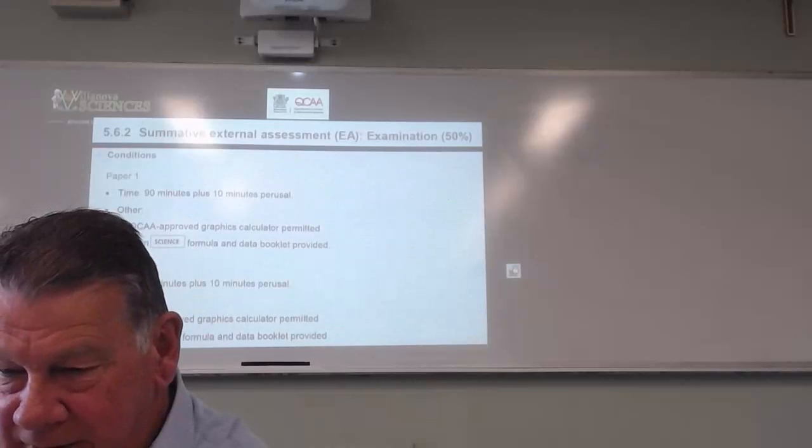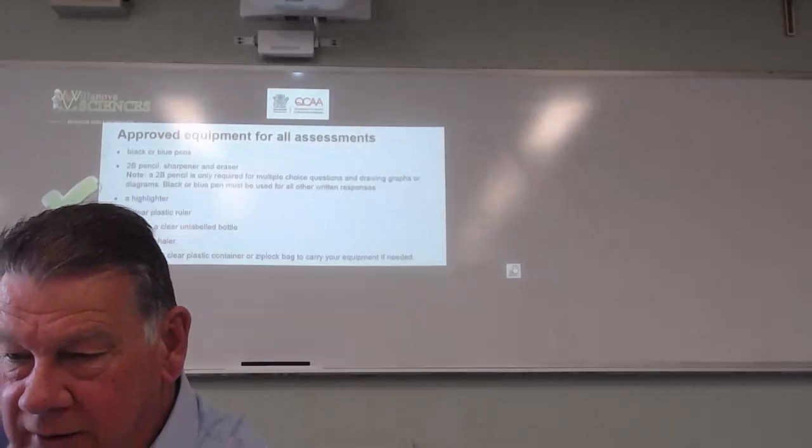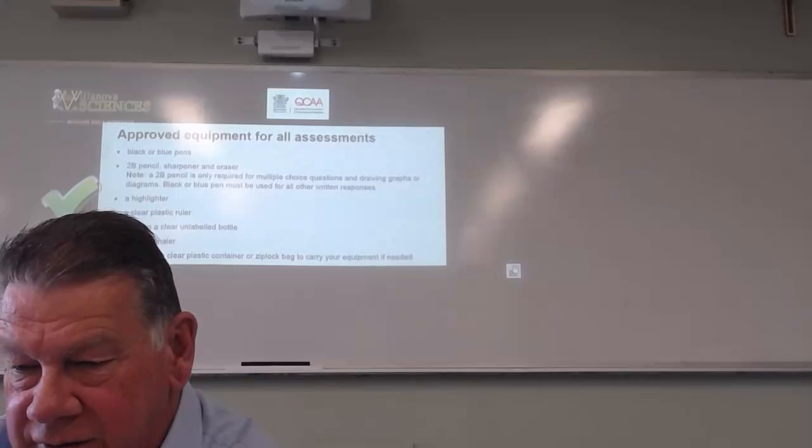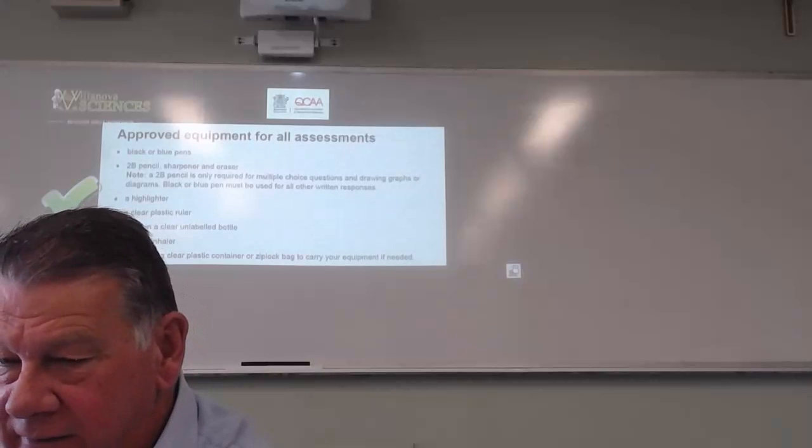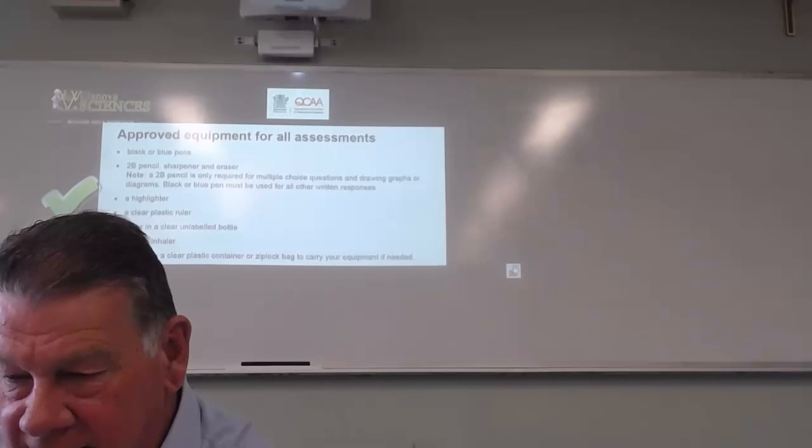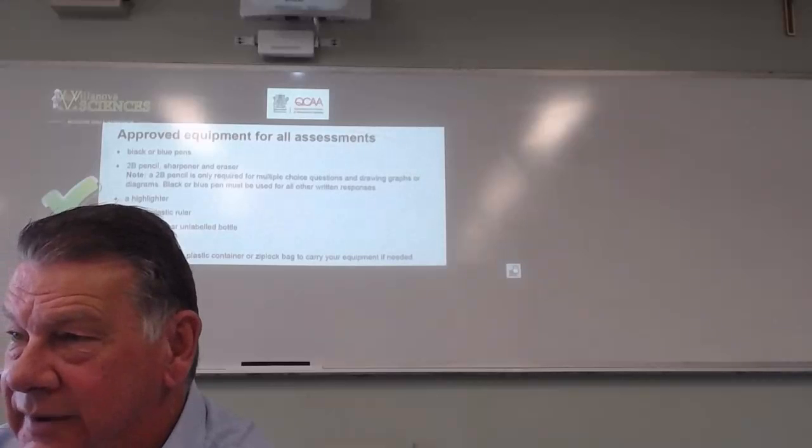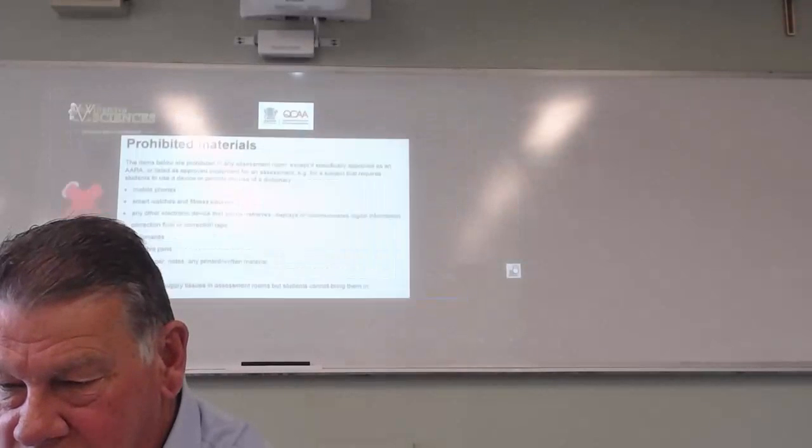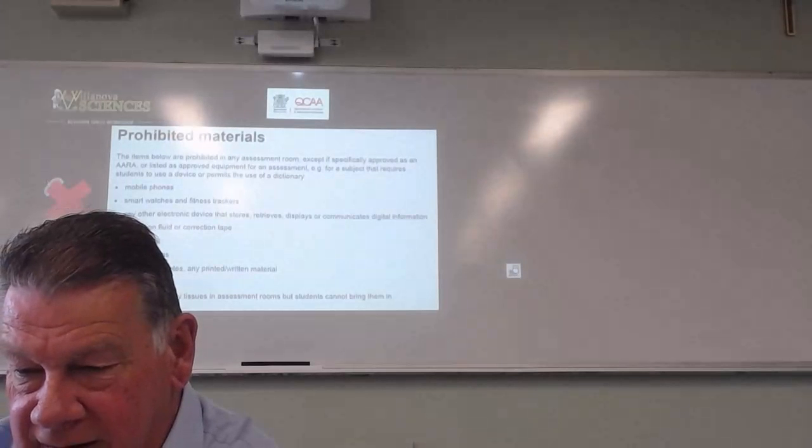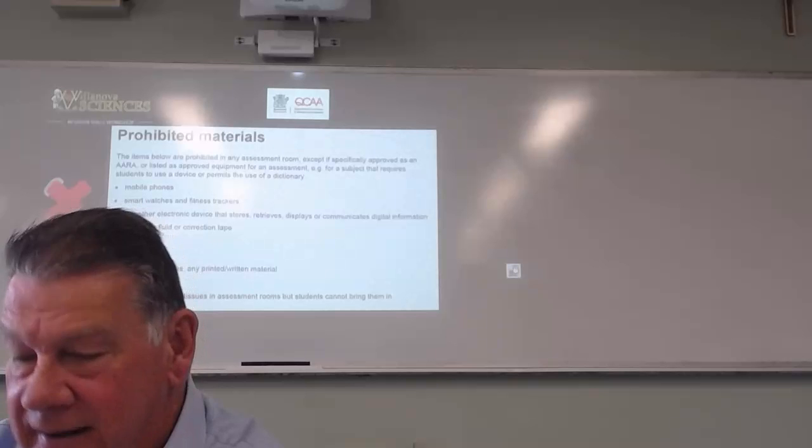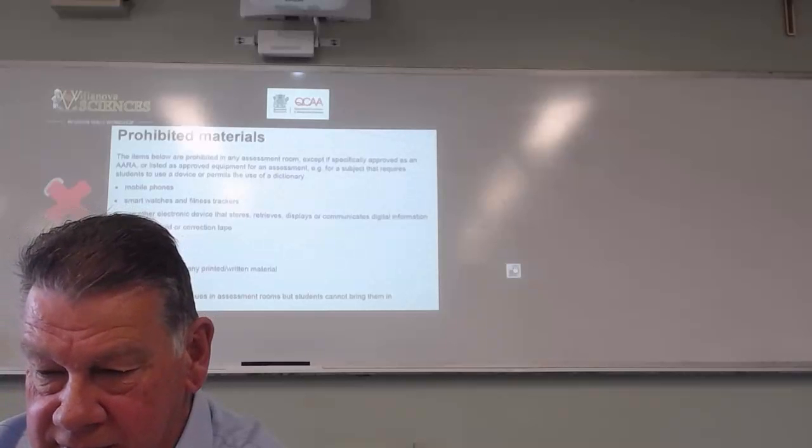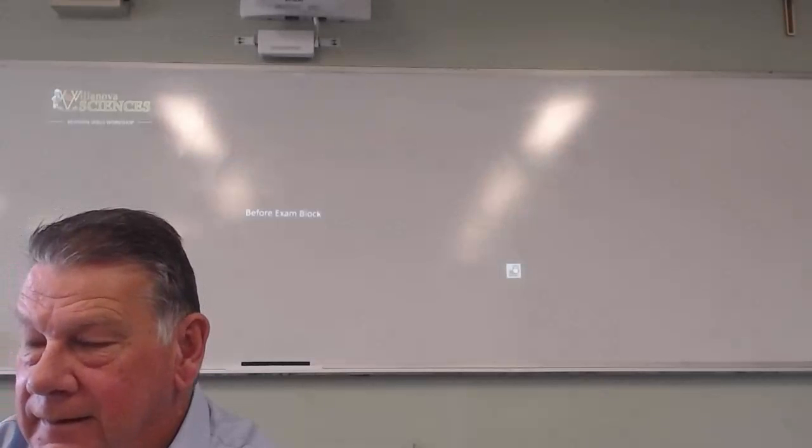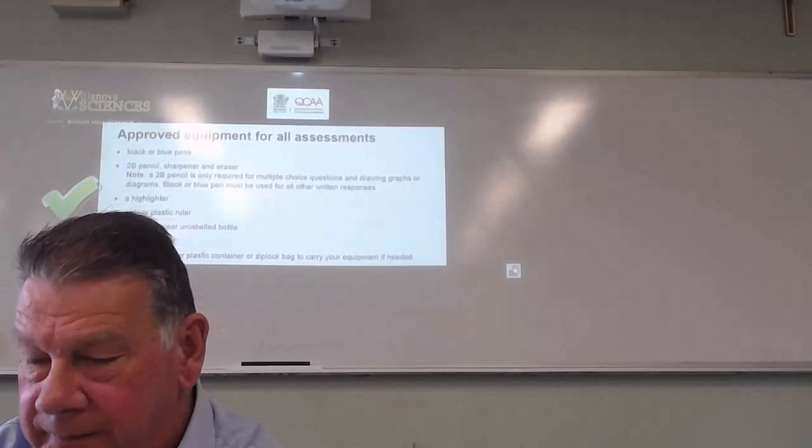Specification. Two 90-minute papers. Ten minutes perusal. Approved equipment. Black or blue pens. 2B pencil sharpener and eraser. The pencil is only for multiple choice questions on drawing graphs or diagrams. Black or blue pen must be used for all other written responses. You're allowed a highlighter, a clear plastic ruler, water in a clear unlabeled bottle and the asthma inhaler is not compulsory unless you have asthma. You are not, however, allowed to have any electronic equipment other than the calculator, correction fluid or tape, dictionaries, erasable pens are not allowed, blank paper notes, any written material or tissues. Ruler is critical. Have a ruler.